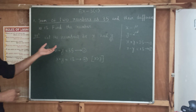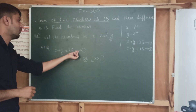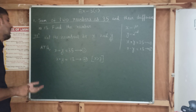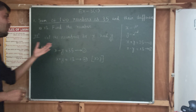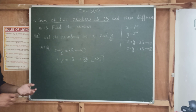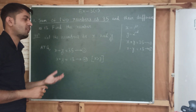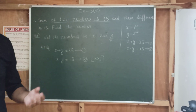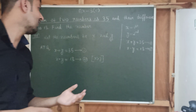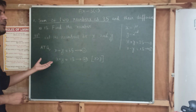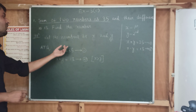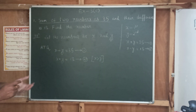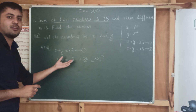We go to the linear equations — equation 1 and equation 2. This linear equation can be solved by three methods. The first one is the substitution method, the second one is the elimination method, and the third one is the cross-multiplication method. You can use any of the three methods to solve these two equations.